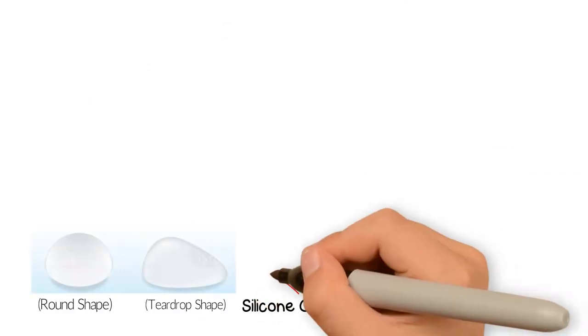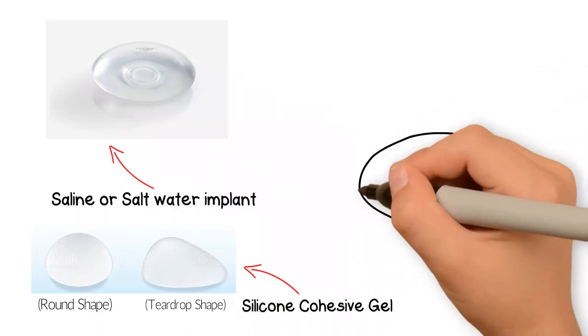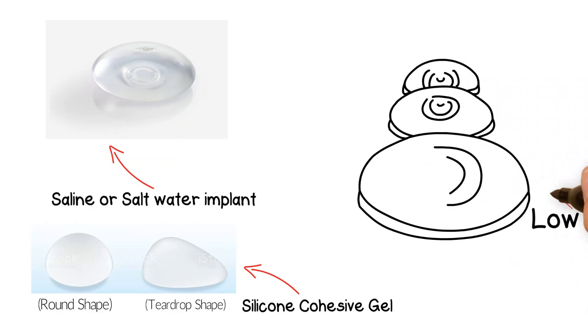There are two types of implants, silicone cohesive gel and the other one is saline or salt water implant. These can come in several different sizes and various profiles such as low, moderate, or high profile.